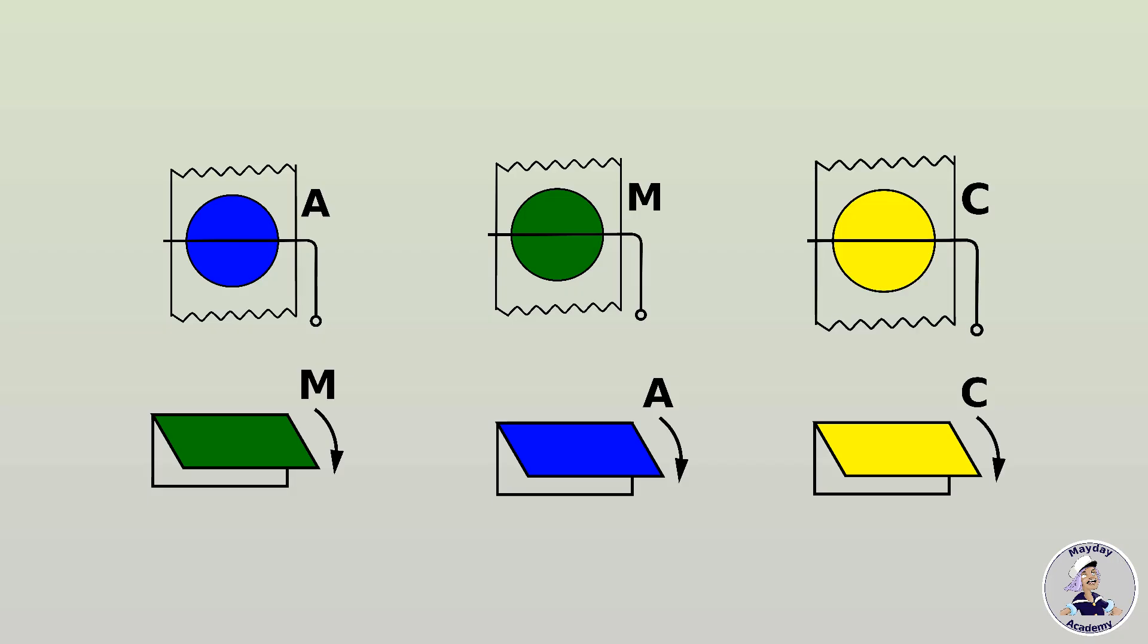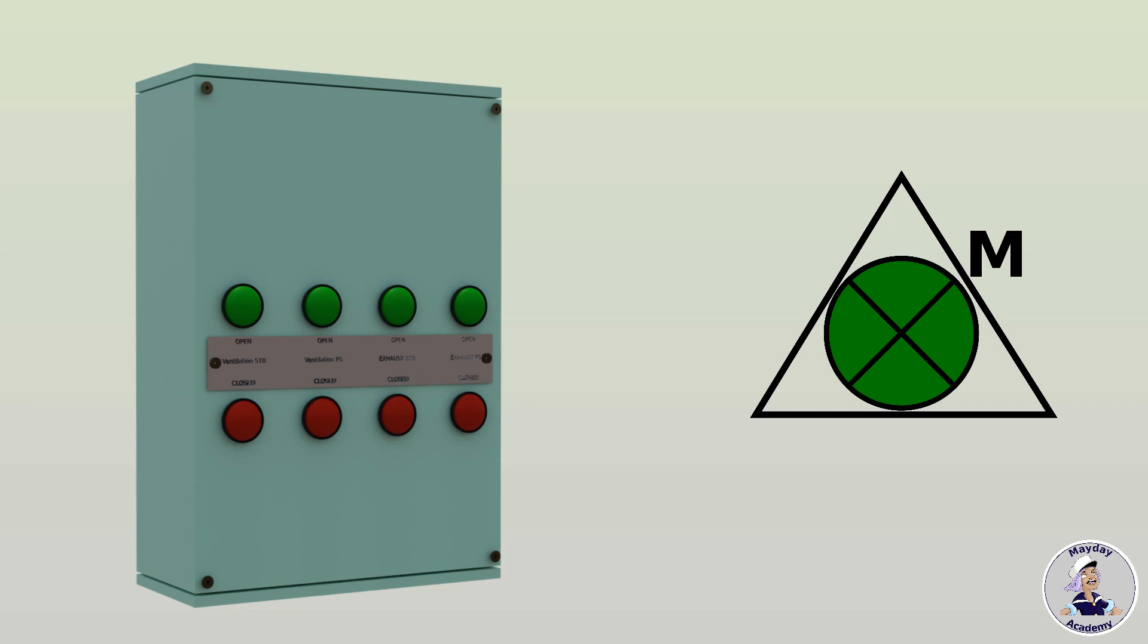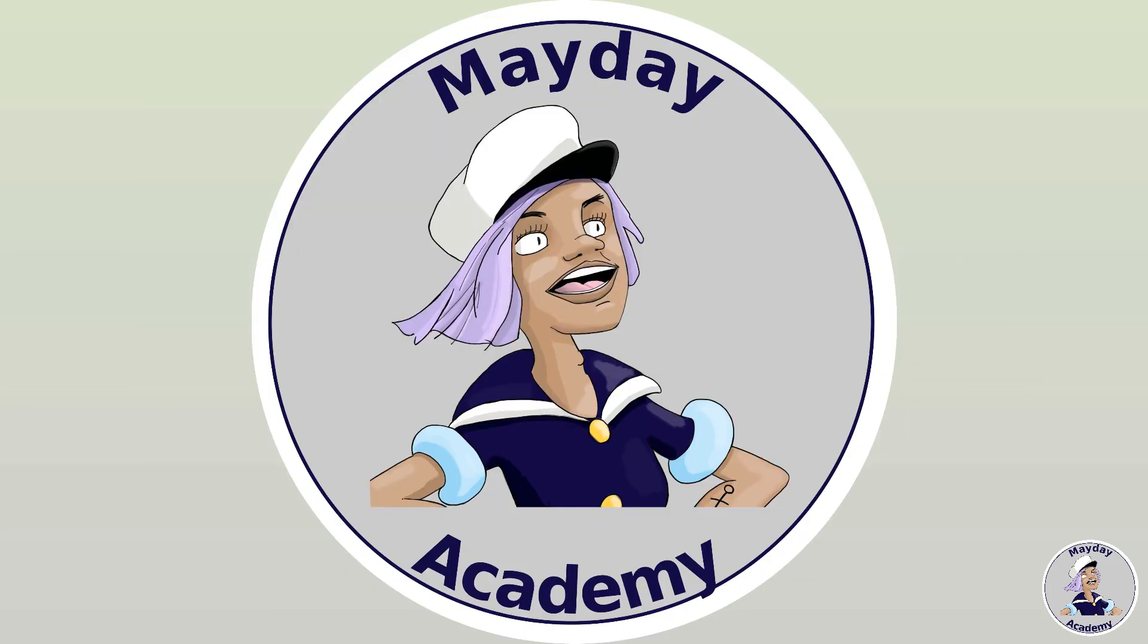Some devices, including flaps, dampers and ventilation fans, can be remotely operated from control stations indicated by triangular icons with device details. Understanding these components and icons is crucial for effective firefighting and safety on board. Stay informed, stay safe.